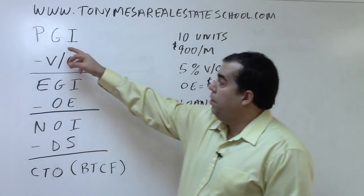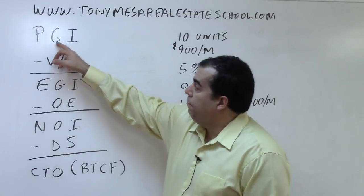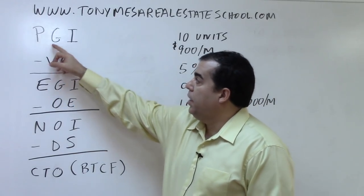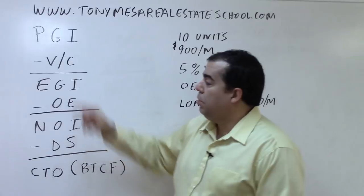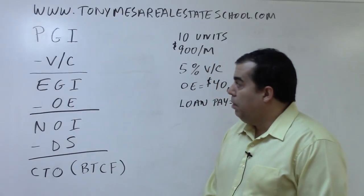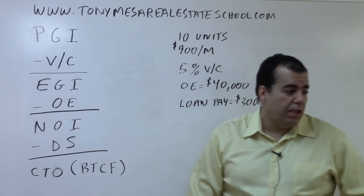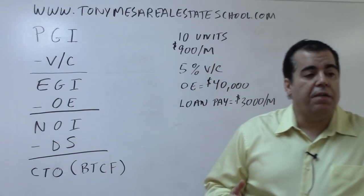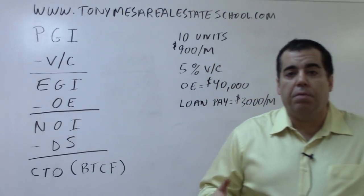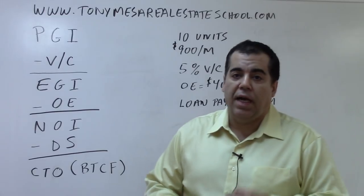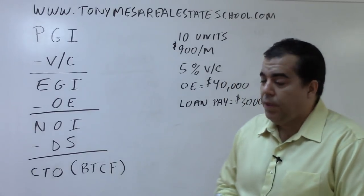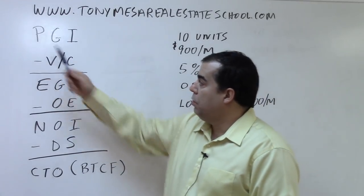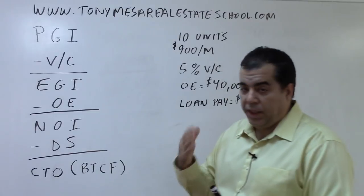Beginning with the first initials: PGI — that's Potential Gross Income. The Potential Gross Income is how much money is coming in if all the property is rented out all the time. The name tells you what it's about.